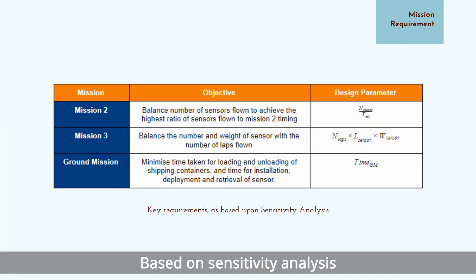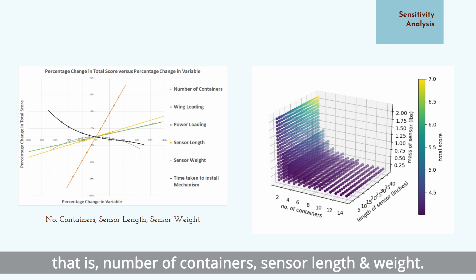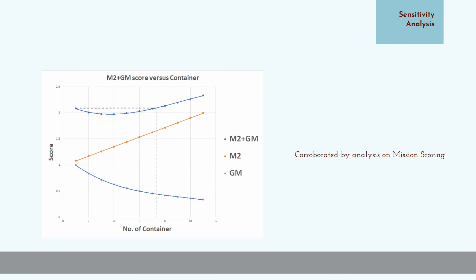Based on sensitivity analysis, these are the three key requirements that we have come up with. From sensitivity analysis, we chose to focus on the overall mission score. Based on the analysis, we concluded that three factors were of utmost importance: the number of containers, sensor length, and its weight. By plotting a three-dimensional graph in Python and introducing a power limit, we concluded that a single large sensor is the most optimal for scoring. This conclusion was corroborated by an analysis on mission scoring. From the graph shown, the score achieved by having a single container is only surpassed when we exceeded eight containers.